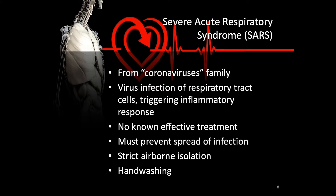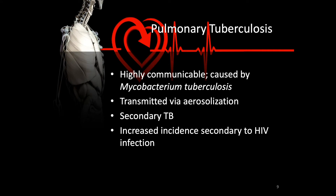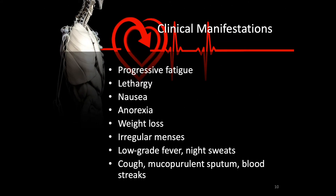Pulmonary tuberculosis, or TB, is a highly communicable disease caused by Mycobacterium tuberculosis, transmitted via aerosolization. Patients usually do not develop severe symptoms until the disease progresses to secondary TB. The incidence of secondary TB has increased since the onset of the HIV crisis. While primary TB is usually asymptomatic, the reactivation phase — secondary TB — often requires direct treatment. Symptoms consistent with TB include progressive fatigue, lethargy, nausea, anorexia, weight loss, irregular menses, and low-grade fever.